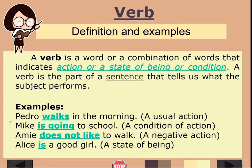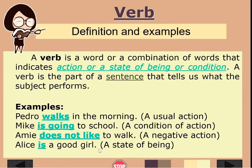Let's look at examples. 'Pedro walks in the morning' — the subject is Pedro and the verb is 'walks,' an action word. 'Mike is going to school' — the verb is 'is going.' 'Amy does not like to walk' — the verb is 'does not like.' 'Alice is a good girl' — the verb is 'is.' There are different kinds of verb, not just action words.